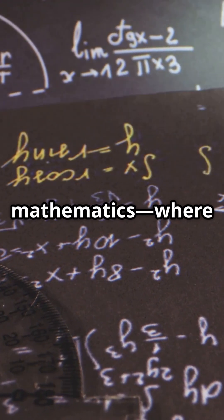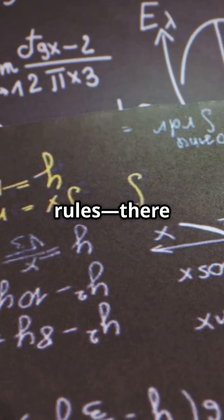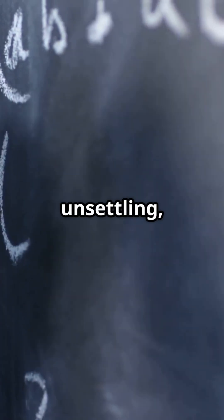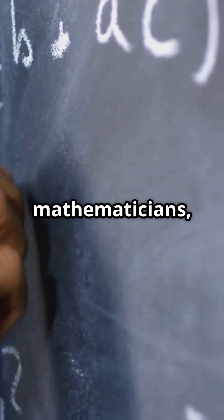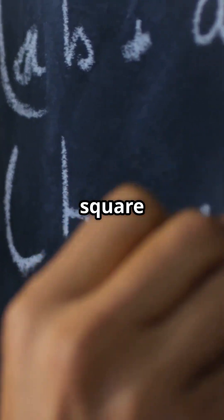In the orderly, rational world of mathematics, where everything is supposed to have its place, its logic, its rules, there exists a number that shattered all certainty. A number so unsettling, it shook philosophers, mathematicians, and thinkers for centuries. That number is √2, the square root of 2.